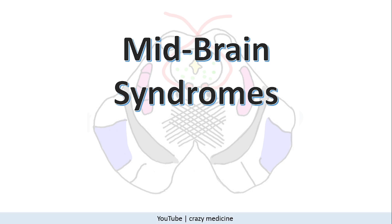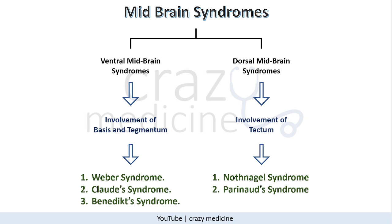First of all, midbrain syndromes. Midbrain syndromes include ventral and dorsal midbrain syndromes. Ventral means it includes the base and tegmentum of the midbrain, and dorsal means there is involvement of the tectum of the midbrain. Ventral midbrain syndromes include Weber syndrome, Claude's syndrome and Benedict syndrome. Dorsal midbrain syndromes include Nothnagel and Parinaud syndromes.